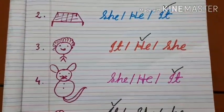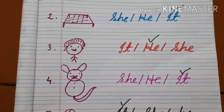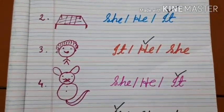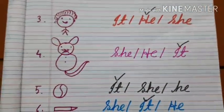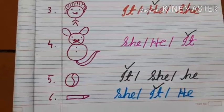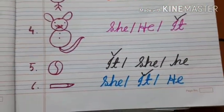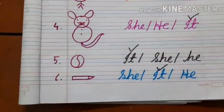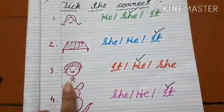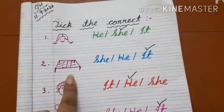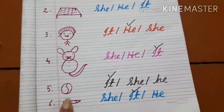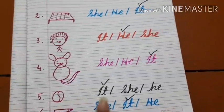Now see this picture — this is a cat. Cat is an animal, so with an animal what will we use? She, he, or it? Yes, it will be it — I-T. Now this is a ball — this is a thing, not an animal. So with a thing, what will we use? I-T, it. And this is a pencil — it is again a thing, so with a pencil what will we use? I-T, it. So: with a girl we use she, with a boy we use he, with a thing we use it, with an animal we use it.